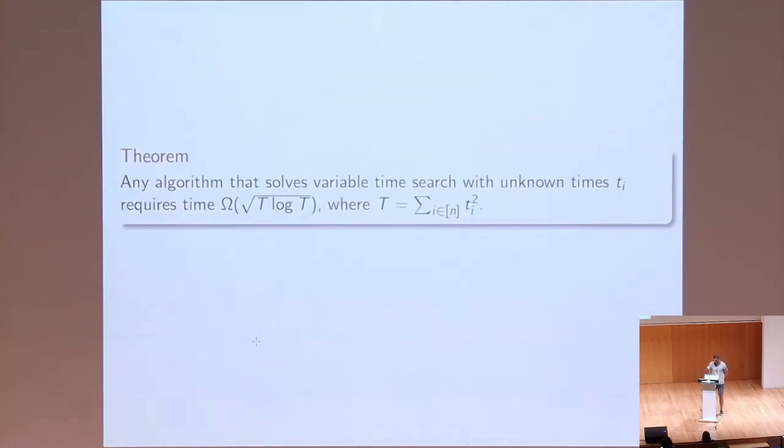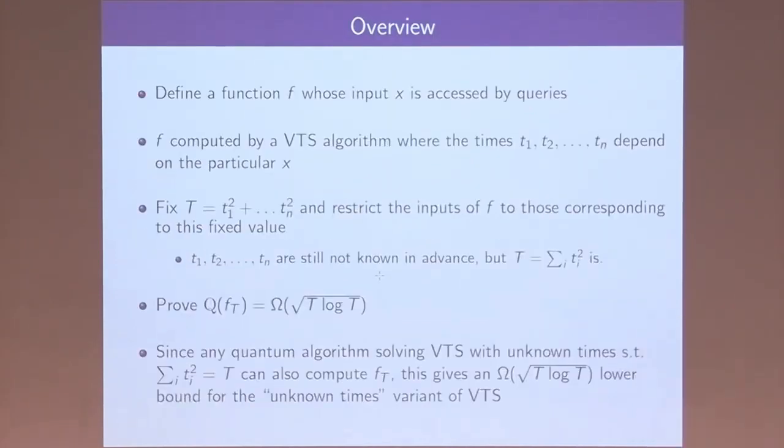And for the lower bound, we show that any quantum algorithm solving the variable time search problem with unknown times must take at least square root of t log t time steps. And for a high-level overview how to do that, we will define a function in query computational model which can be computed by a variable time search algorithm. But it comes with a twist that the running times are themselves encoded by the particular input for this function. And so, to parametrize this complexity in terms of capital T, we fix its value and restrict our attention to those inputs where these times squared gives this fixed value. And so this capital T is known, but the individual times are still unknown.